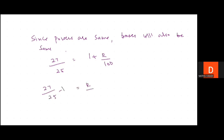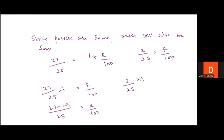Taking LCM as 25: (27 − 25)/25 = r/100, which gives 2/25 = r/100. Bringing 100 to the left-hand side (from division to multiplication): r = (2 × 100)/25 = 8. So our answer is 8% per annum. The rate of interest is 8% per annum.